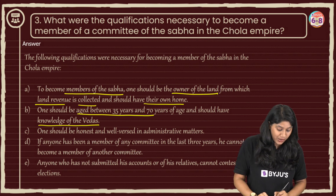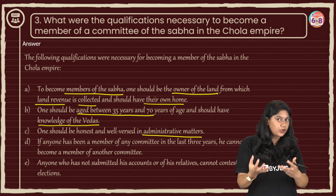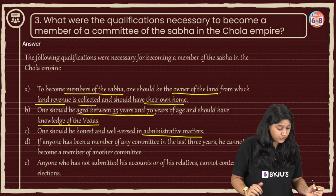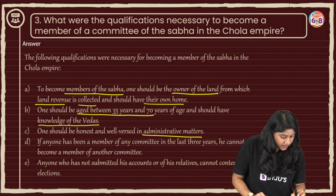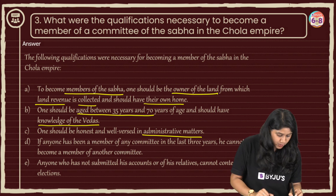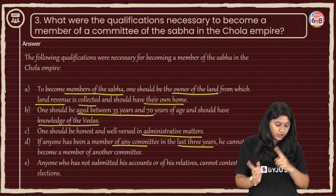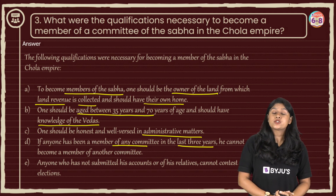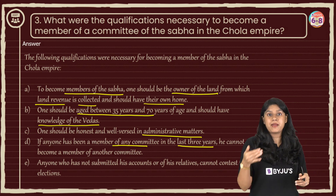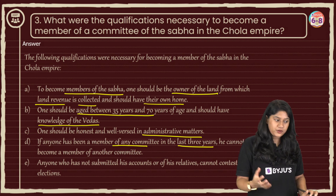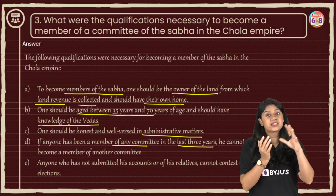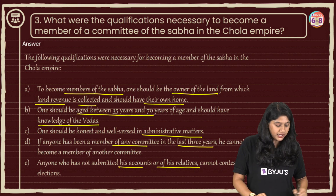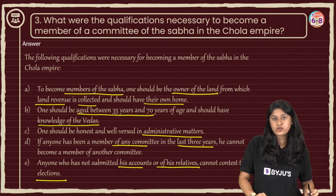Then, one should be honest and well-versed in administrative matters — it is very important that committee members be honest. The fourth point is that if anyone has been a member of any committee in the last three years, they cannot be a member of another committee. There were various different communities and committees, and one person cannot be a member of two committees simultaneously — that is quite fair as they need to contribute to discussions.